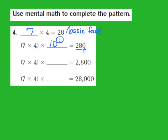Let's take a look at the next step in the pattern. They give me 7 times 4 times blank equals 2,800. I'm missing my power of 10 again. When I look at my product of 2,800, and remember the basic fact is 28, I see that there are two zeros behind the 28. So I'm going to write down the second power of 10, because my exponent should match the number of zeros. If my exponent is 2, I should have two zeros — 1, 2 — so I know I'm on the right track.